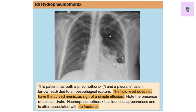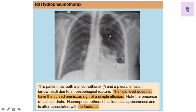Next is hydropneumothorax. When we studied pleural effusion we saw blunting of the costophrenic angle, and here you can also see blunting — but the patient has both pneumothorax and pleural effusion. This can be due to an esophageal rupture. The fluid level does not have the curved meniscus sign of a simple effusion; a simple effusion would show a clean meniscus without this haziness. Note that a chest drain has been placed. Hemopneumothorax has identical appearances and is often associated with rib fracture.